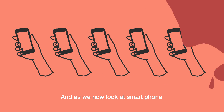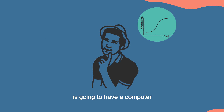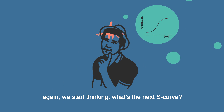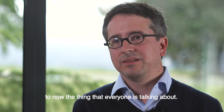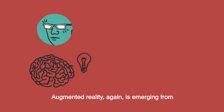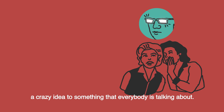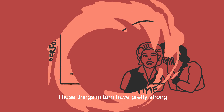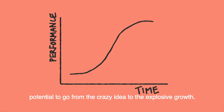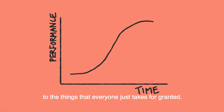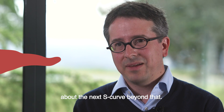As smartphones become a universal product — really the first time everybody on earth is going to have a computer — we start thinking: what's the next S-curve? Machine learning has gone from the crazy idea to the thing that everyone is talking about. Augmented reality is also emerging from a crazy idea to something everyone is talking about. Those things in turn have strong potential to go from crazy idea to explosive growth to the things that everyone just takes for granted — and then we'll start thinking about the next S-curve beyond that.